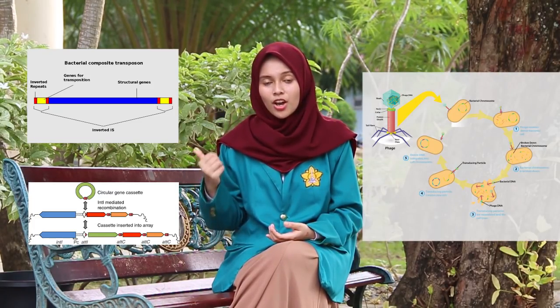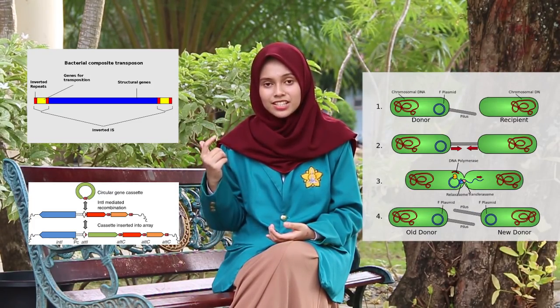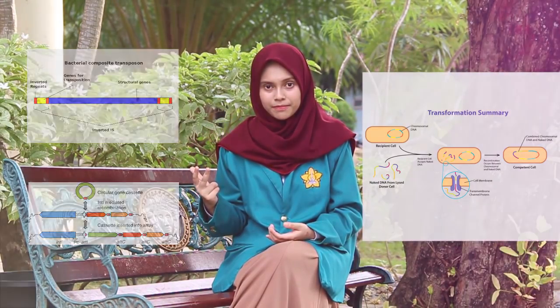This bacterial ability to transfer resistance is carried by mobile genetic elements such as transposons, integrons, and plasmids, which can be transmitted into other bacterial cells through transduction, conjugation, and transformation.